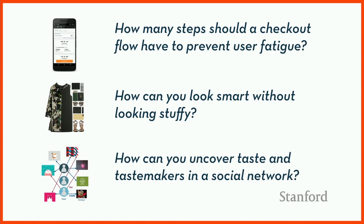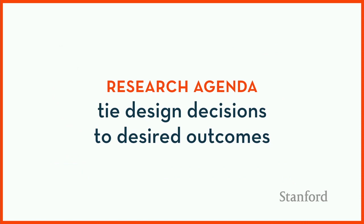People have similar questions in other domains about tying design features to performance or preferred outcomes. In mobile design, people might want to know how many steps a checkout flow should take to prevent user fatigue. Or if you're creating an outfit, how can you look smart without looking stuffy? This is what my research is about: how to use data to tie design decisions to desired outcomes.